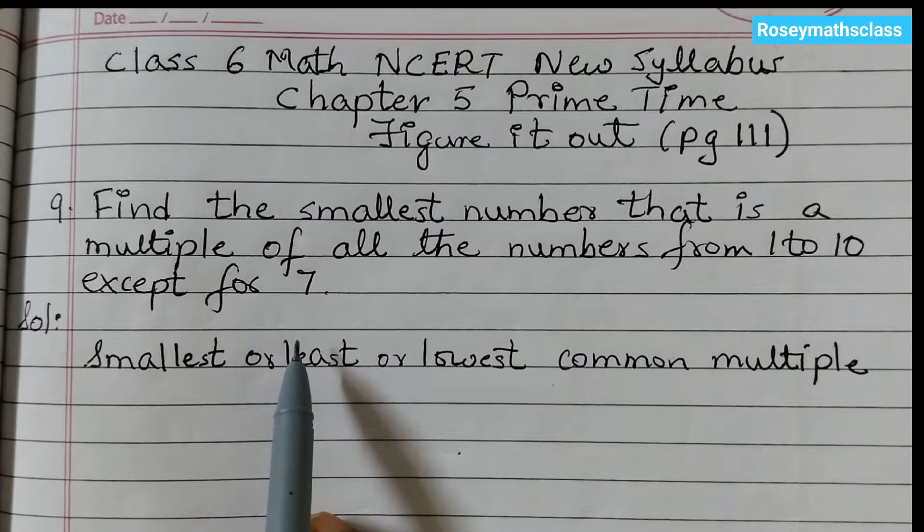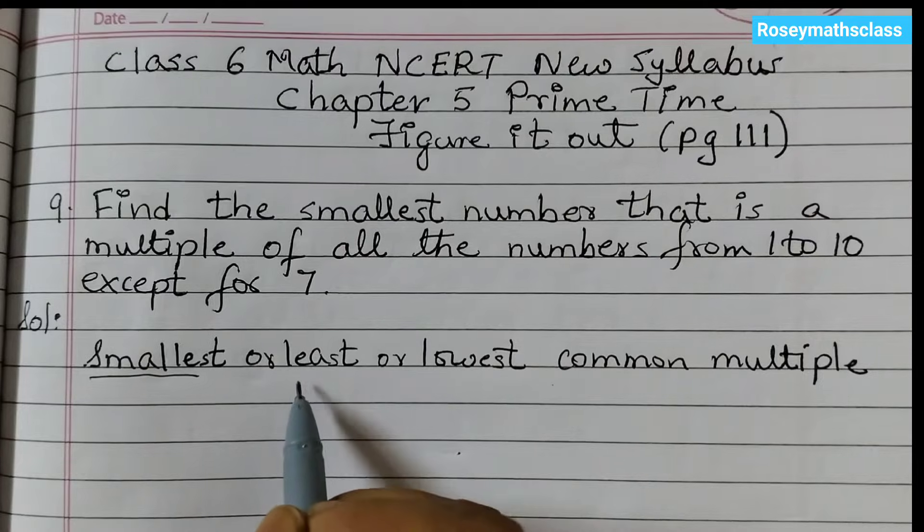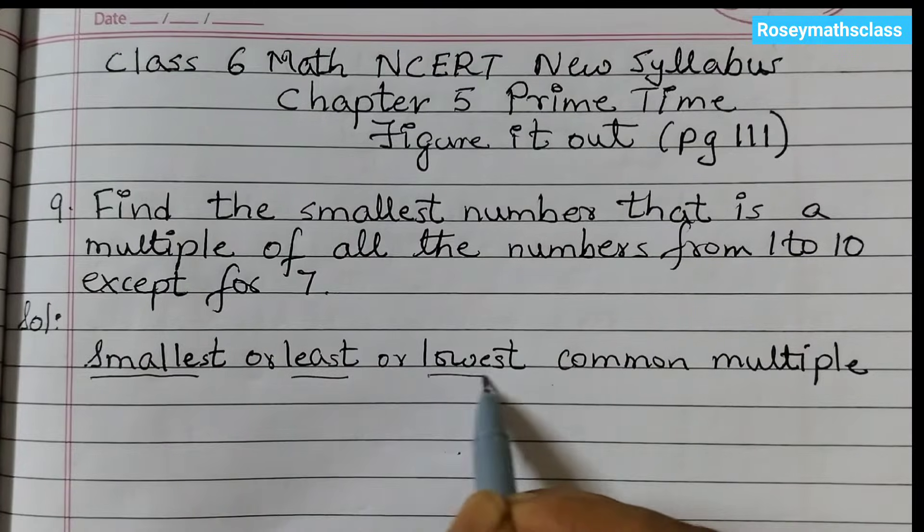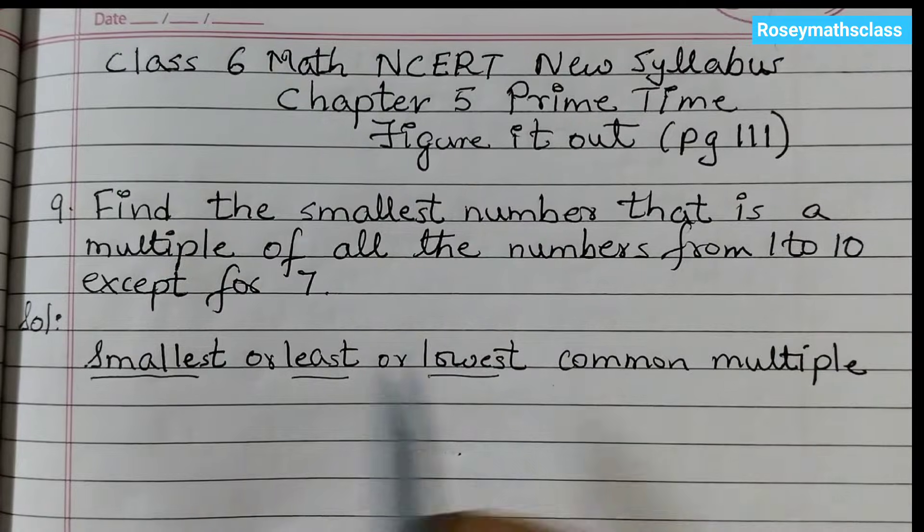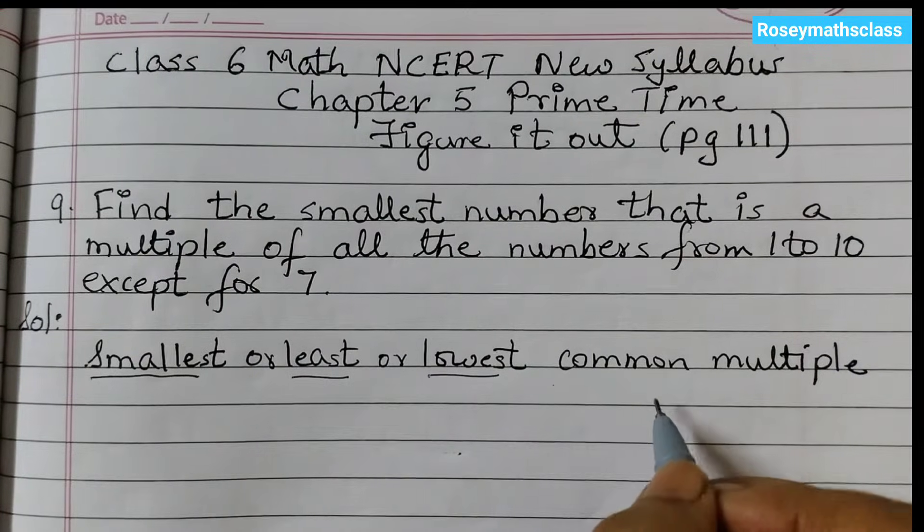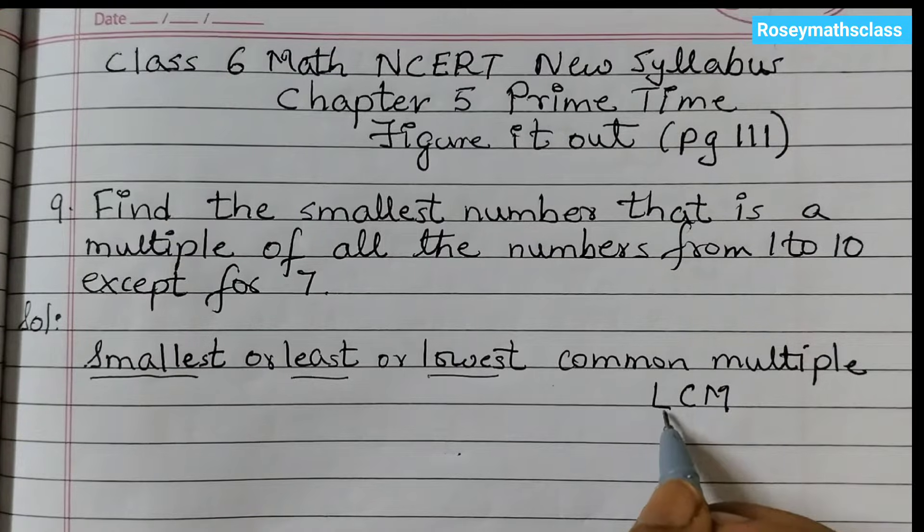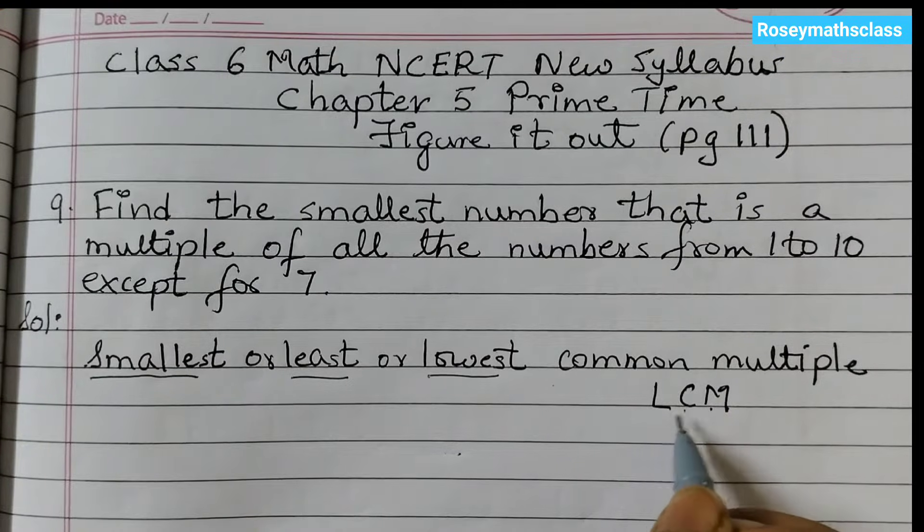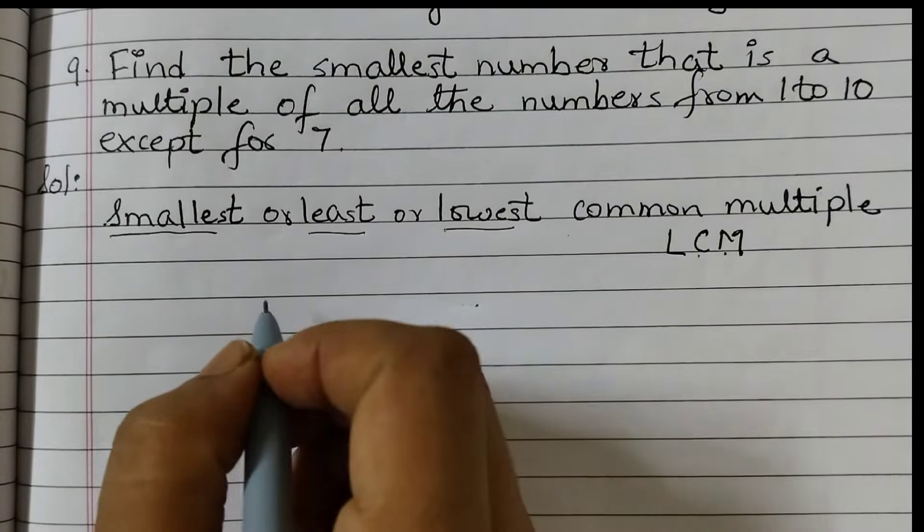Here we need to find the smallest common multiple, or the lowest, or the least - any of these terms we can use: smallest, least, or lowest common multiple of all the numbers from 1 to 10 except 7. The short form is LCM: lowest common multiple or least common multiple. First we will arrange all the numbers in a row.